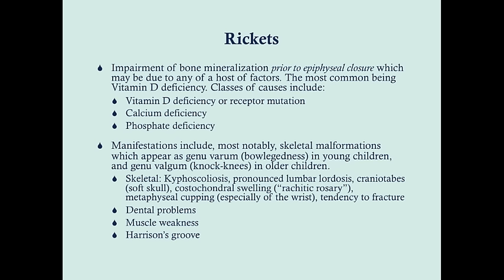Manifestations of rickets are mostly the same regardless of cause, and will most notably include skeletal malformations — the most problematic feature. It can impair the child's growth and lead to long-term damage. The most obvious appearance in a younger child is genu varum, or bow-leggedness, but it can also be genu valgum in an older child. These are not specific to rickets but will likely be the most prominent symptom.